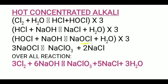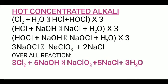Second reaction: HCl plus NaOH gives NaCl plus H2O. Third reaction: HOCl plus NaOH gives NaOCl plus H2O — multiplied by three. So overall we are getting three NaOCl, which again reacts giving NaClO3 plus two NaCl. This is the key difference compared to dilute alkali — three NaOCl gives NaClO3 plus two NaCl.